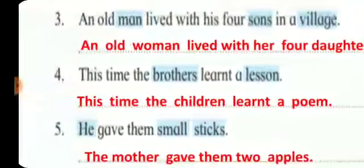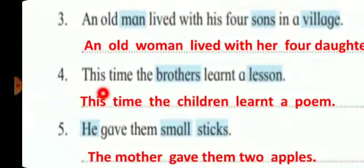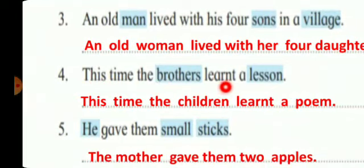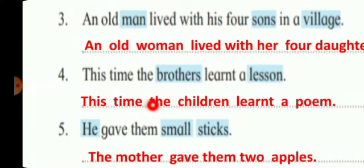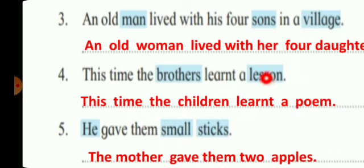Now the next is: 'This time the brothers learnt a lesson.' We have to change 'brothers' and 'lesson.' So: 'This time the children learnt a poem.' Instead of 'brothers' we write 'children,' and instead of 'lesson' we write 'poem.'